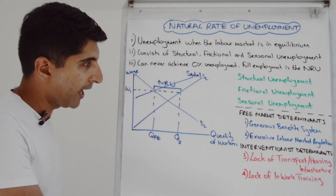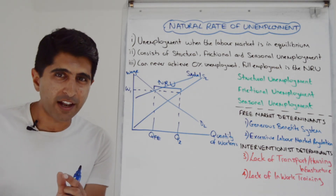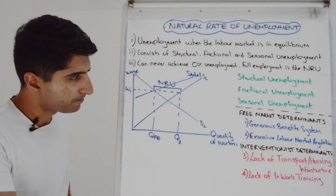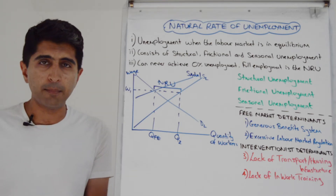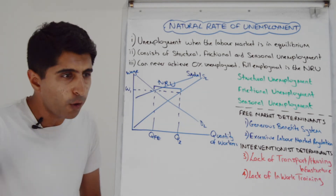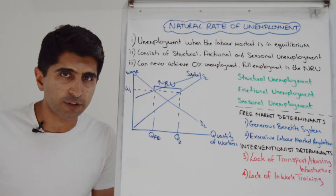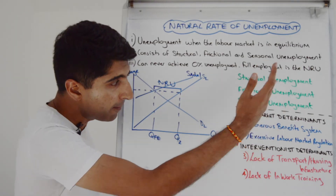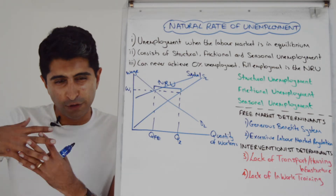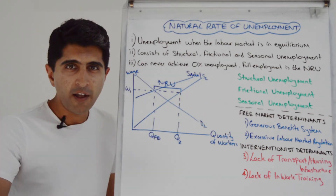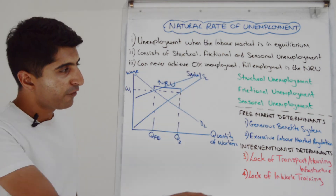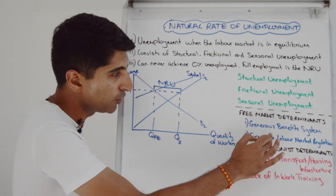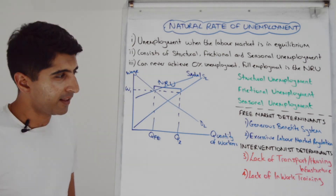Free marketeers say that too much government intervention is the reason. If the benefit system is too generous, it almost encourages structural unemployment — where if you're occupationally immobile, you remain so and don't engage in training programs to re-skill yourself. You might be geographically immobile, but with a generous benefit system you don't actually move to where those vacancies are. Even for frictional unemployment, free marketeers would say generous benefits encourage longer search times, increasing the natural rate.